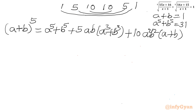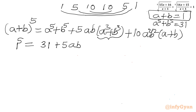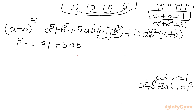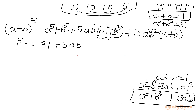Substituting the known values — a + b = 1 and a⁵ + b⁵ = 31 — we get 1 = 31 + 5ab(a³ + b³) + 10a²b². To find a³ + b³, we cube a + b = 1: a³ + b³ + 3ab(a + b) = 1, so a³ + b³ = 1 − 3ab.